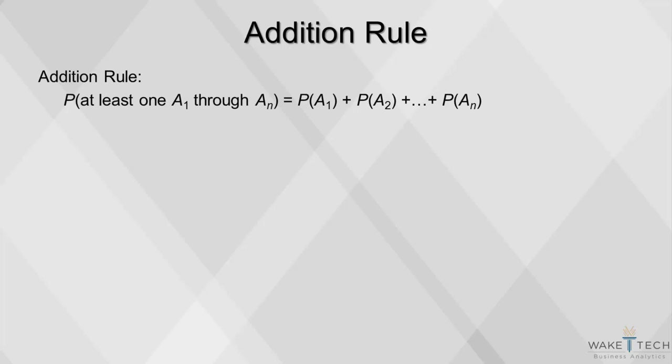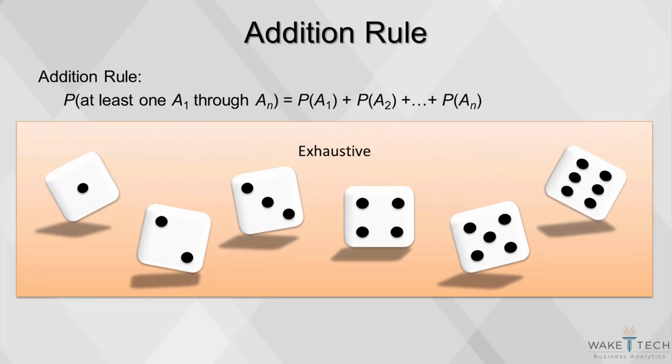The addition rule of probability involves the probability that at least one of the events will occur. Events are exhaustive if they exhaust all possibilities. One of the events must occur. For example, when we roll a 6-sided die, we will always end up with a number between 1 and 6.